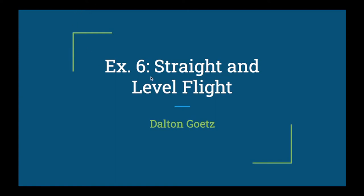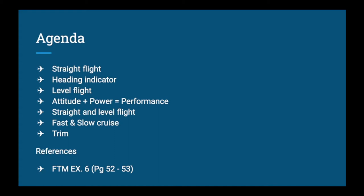All right everybody, today we're moving on to the second lesson in your flight training, Exercise Six: Straight and Level Flight. We're going to cover what straight flight is, the heading indicator, level flight, attitude plus power equals performance, combining them together for straight and level flight, and adjusting our cruise speed whether we want to speed up or slow down. We'll finish by talking about the trim wheel.